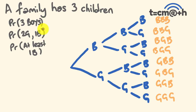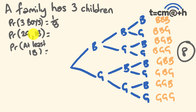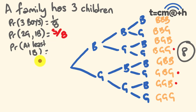Let's work out the different probabilities. The probability of getting three boys — there are eight possible outcomes, and only one scenario gives three boys, so it's one out of eight. For the probability of two girls and one boy: boy-girl-girl, girl-boy-girl, and girl-girl-boy each have two girls and one boy, giving us three out of eight.